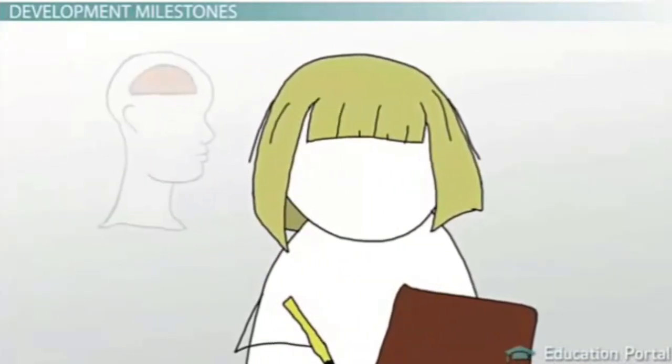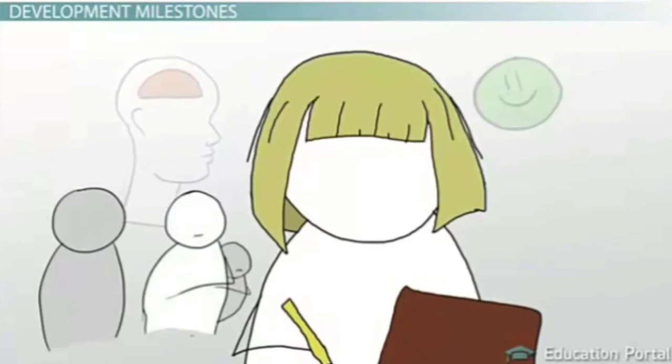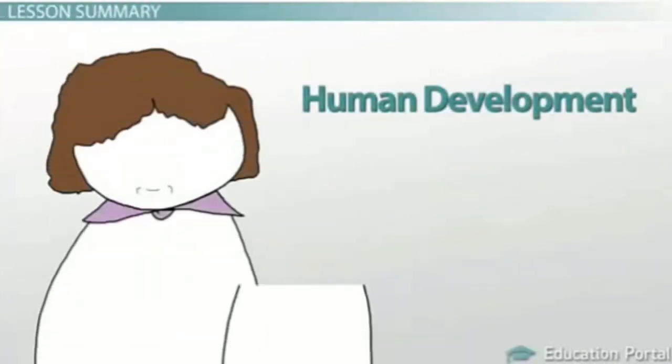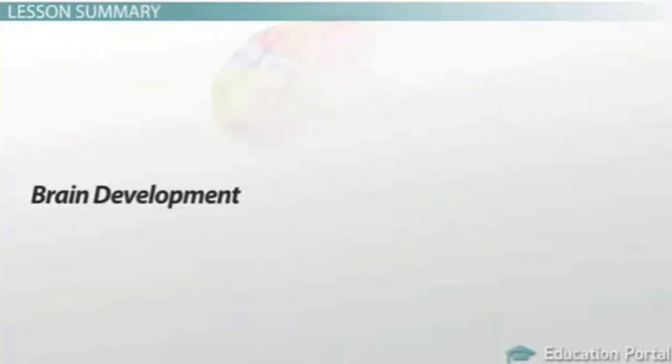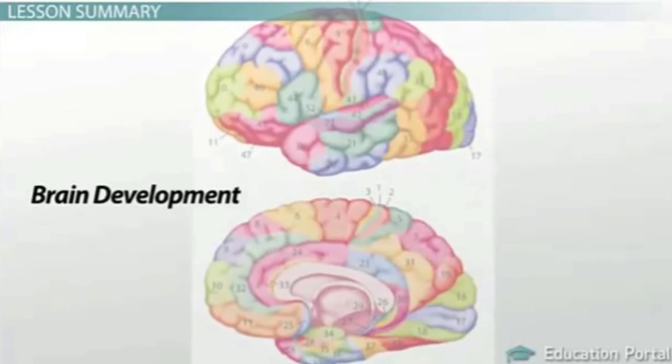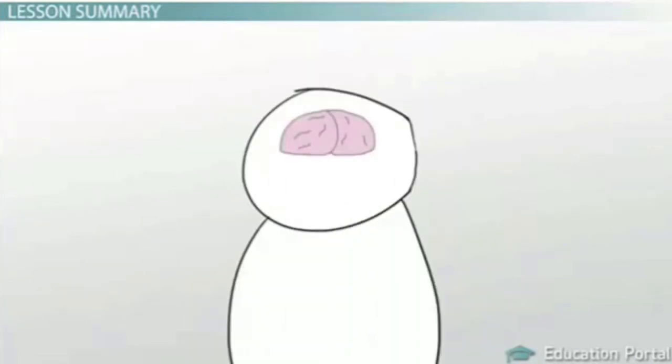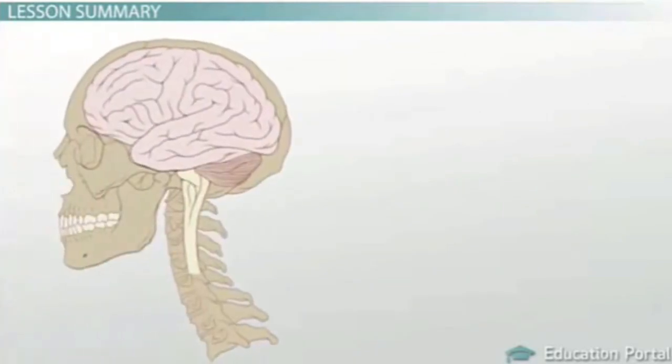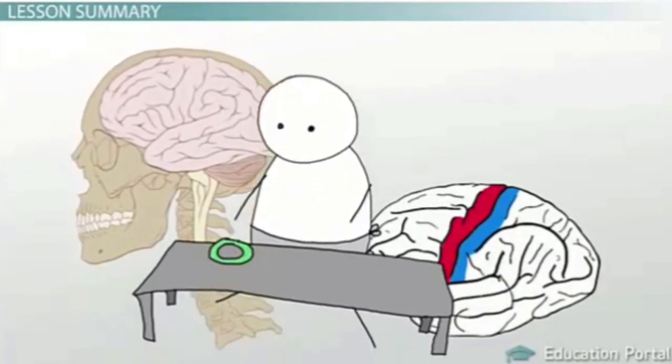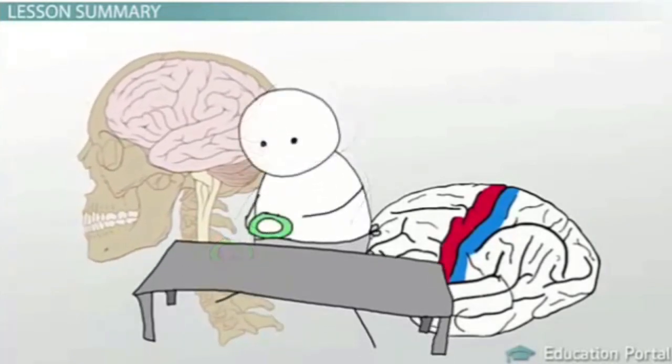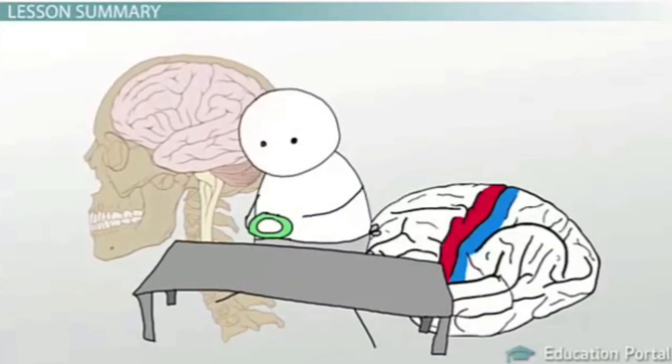Human development is the process of growth and change that all humans go through. Brain development involves the brain's physical changes. In the first two years of life, the brain grows larger and is also more functional. A key part of this brain development is the development of the sensory and motor cortices, which can lead to important milestones in the way a child interacts with and learns from the world around him.